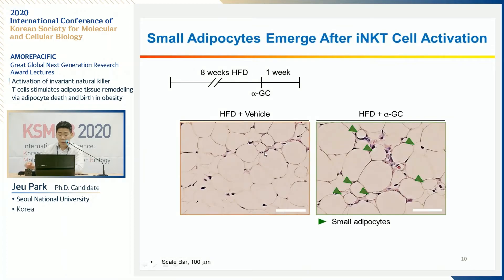To find a clue, we analyzed adipose tissue one week after alpha-GC injection. We found small adipocytes, but at that time we did not know whether these small adipocytes were newly generated or derived from pre-existing mature adipocytes.